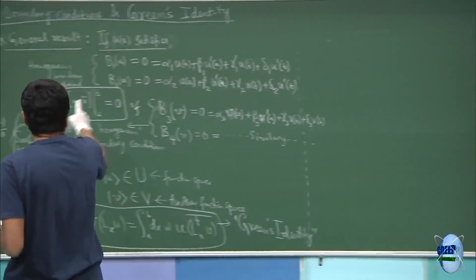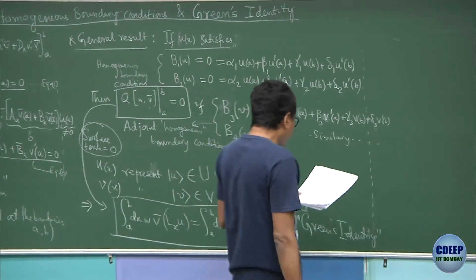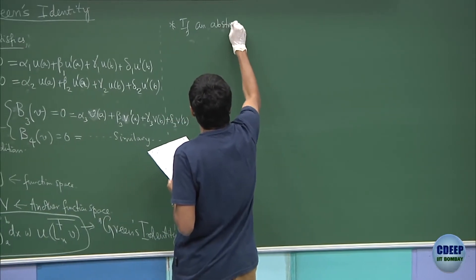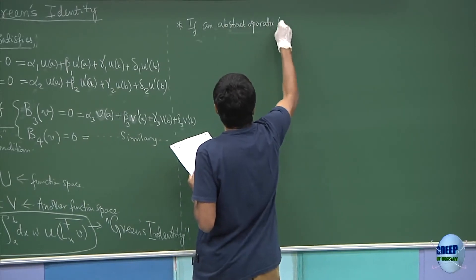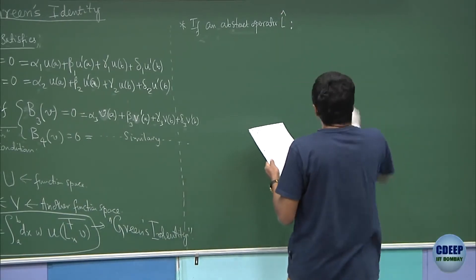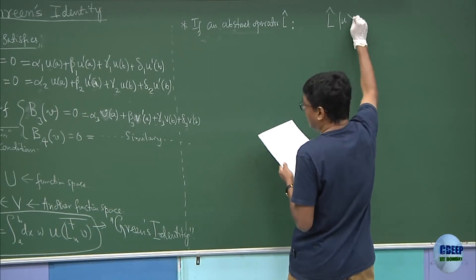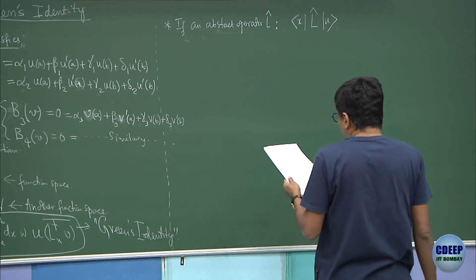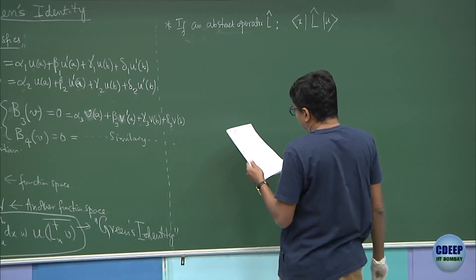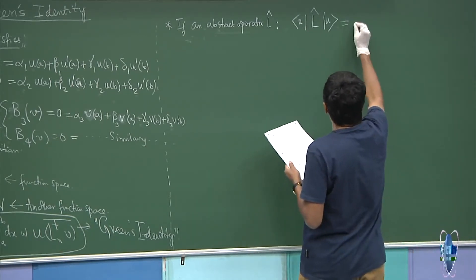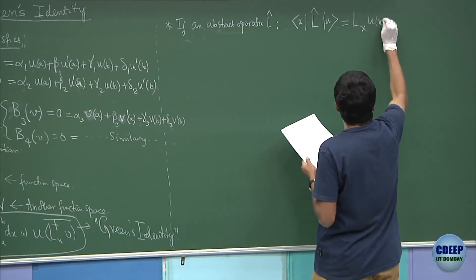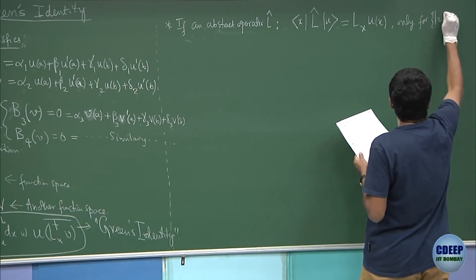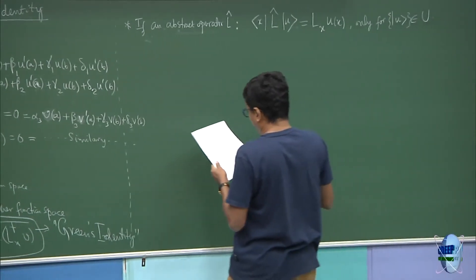For that, we cannot work with L(x)-type operators directly. Let us define an abstract operator L̂ such that L̂ acting on a vector u belonging to the space U gives a new vector, and taking the inner product with ⟨x| gives L(x)u(x). This relationship holds only for vectors u belonging to the U space.